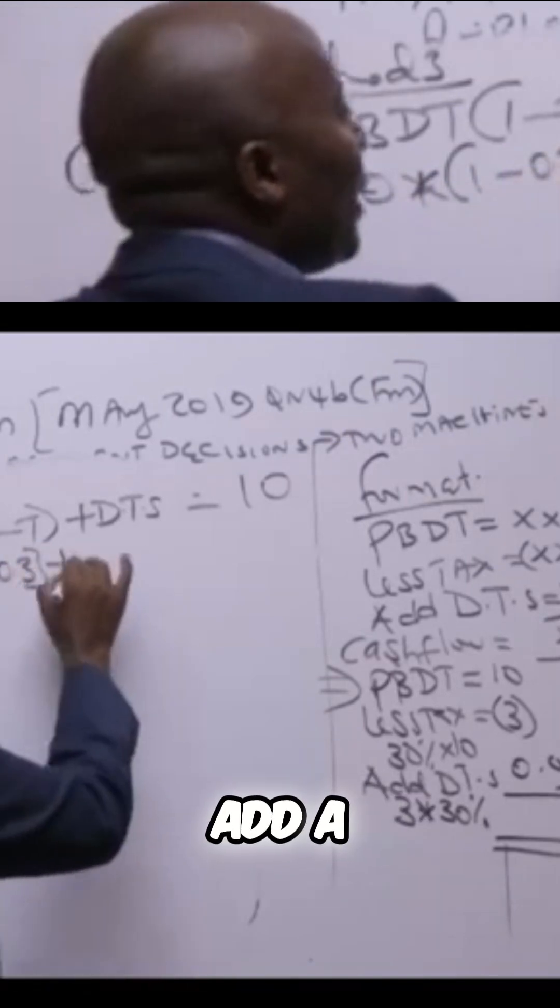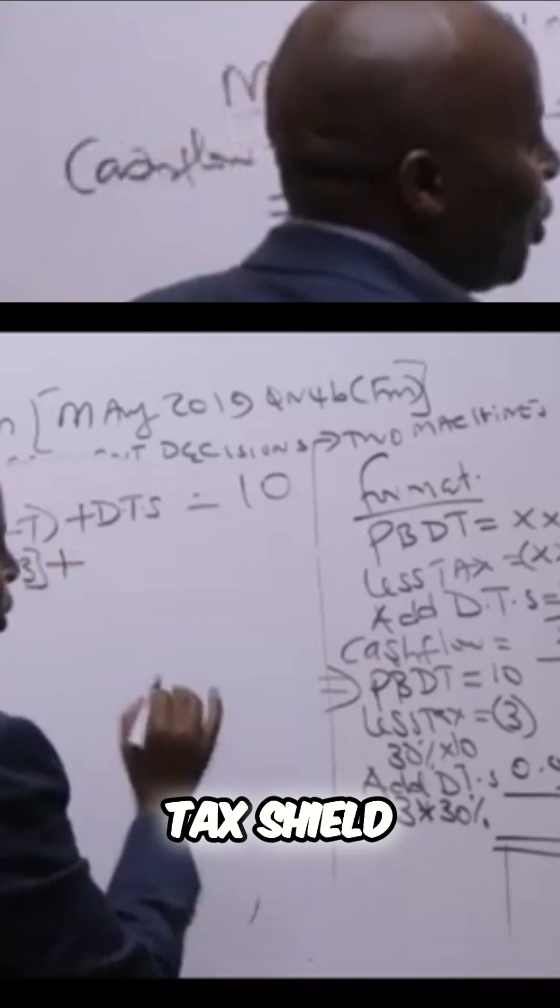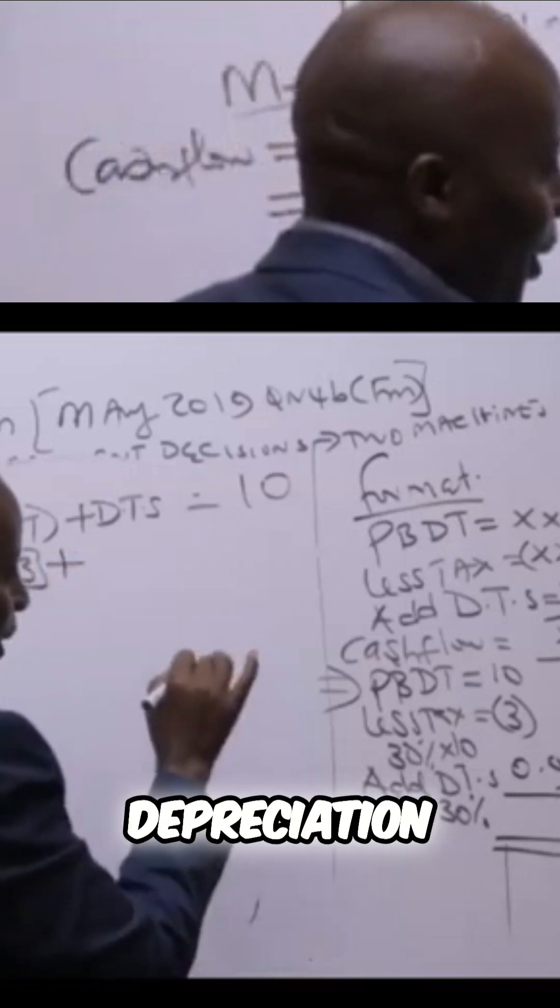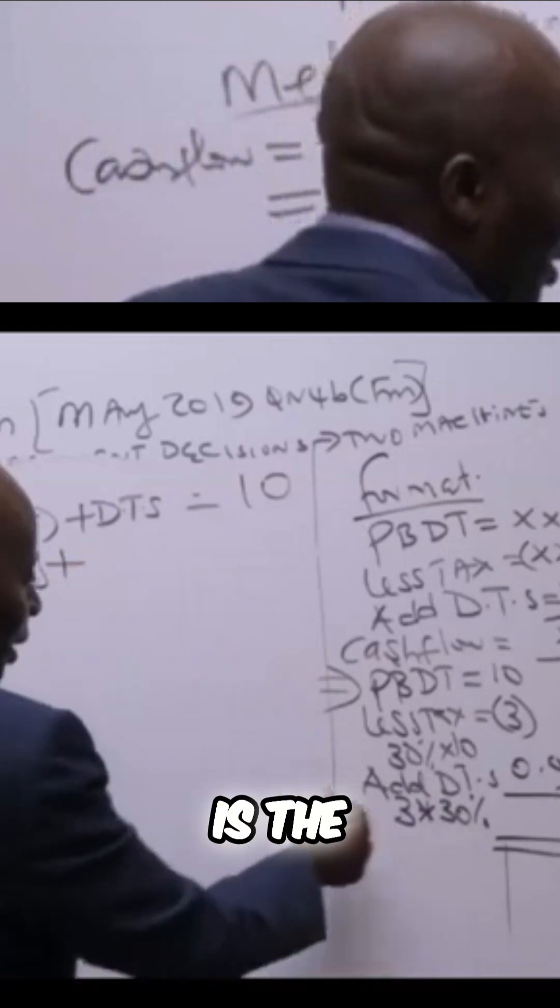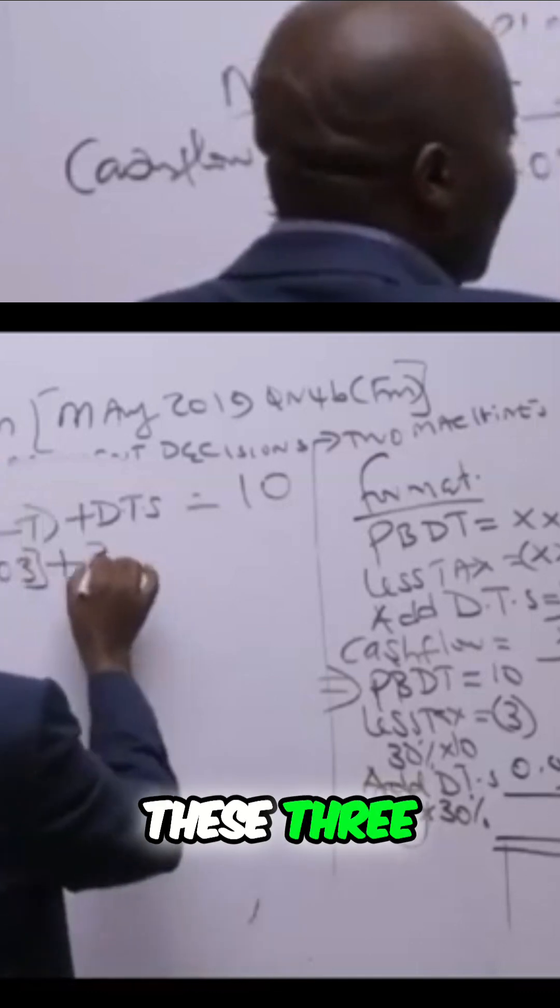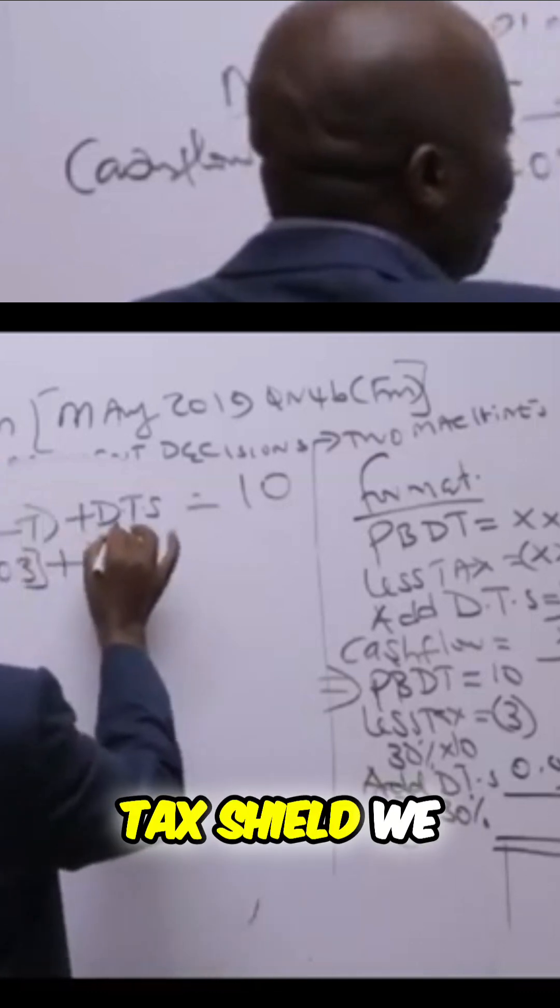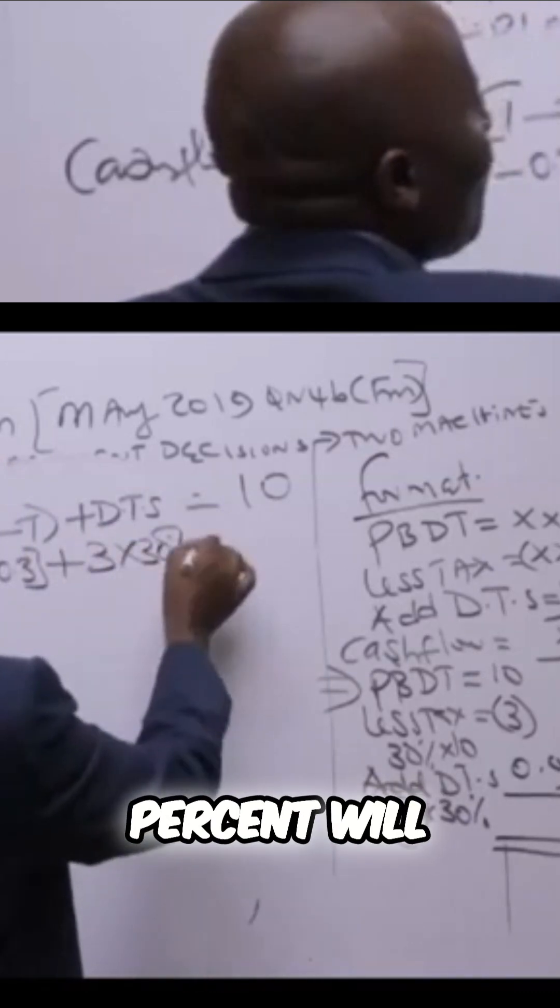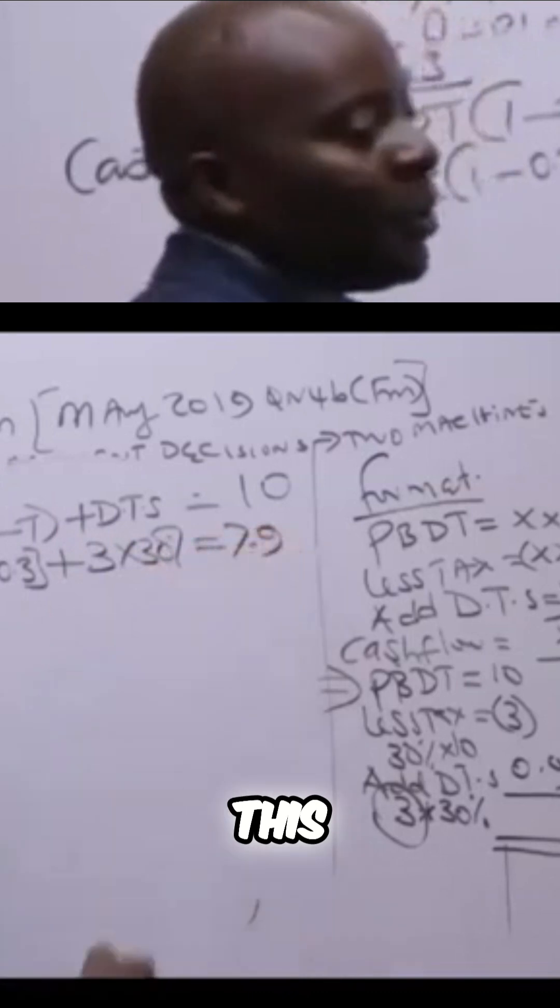And then we shall come and add a depreciation tax shield. So we shall take depreciation. We know what depreciation is - depreciation is this three. So we shall take this three, but because it's a tax shield, we multiply this with 0.3 or 30%.